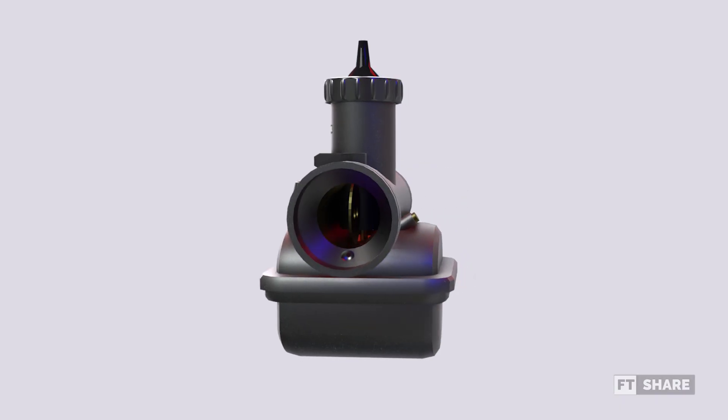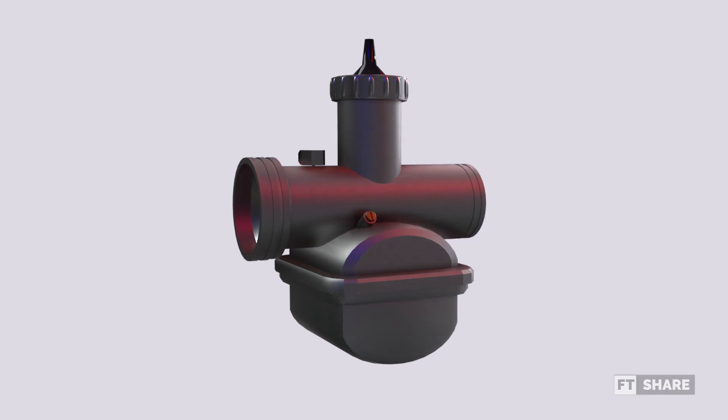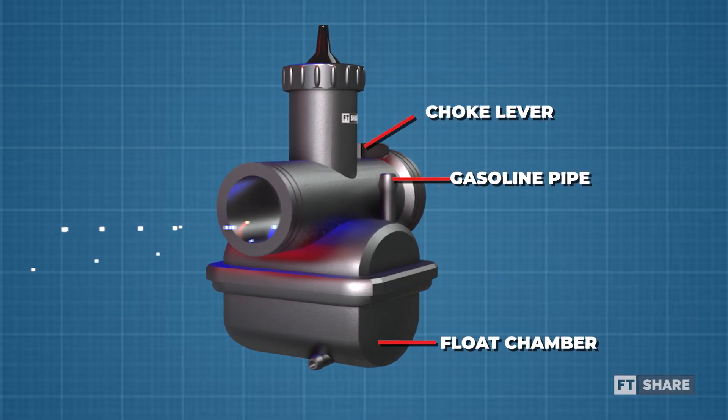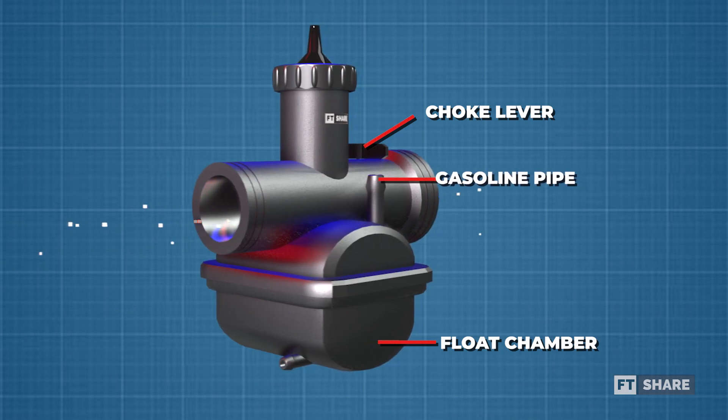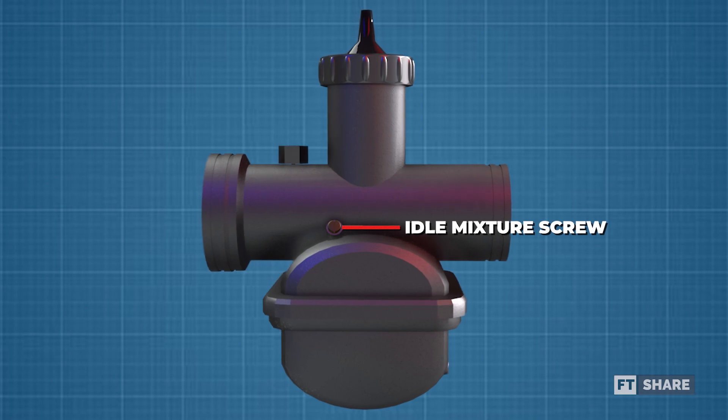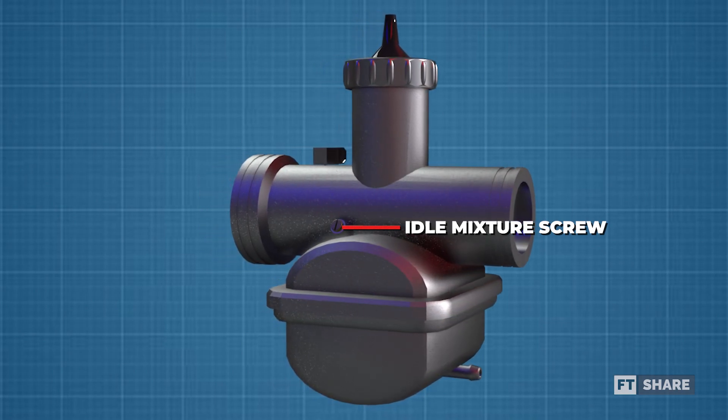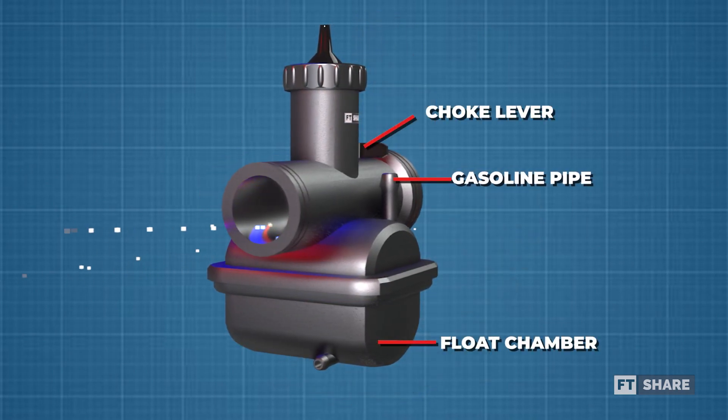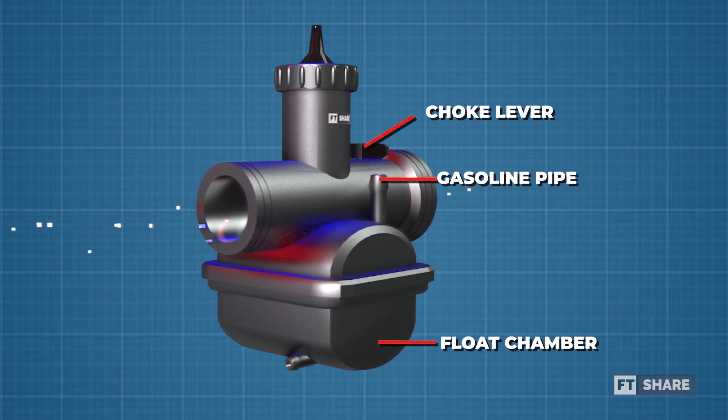Before discussing the working system, it is important to understand the anatomy of the carburetor. From the side, we can see the gasoline pipe or gas intake. Next, we have the idle mixture screw, also known as the idle screw or wind adjustment screw. The third component is the choke lever, and the fourth is the float chamber.